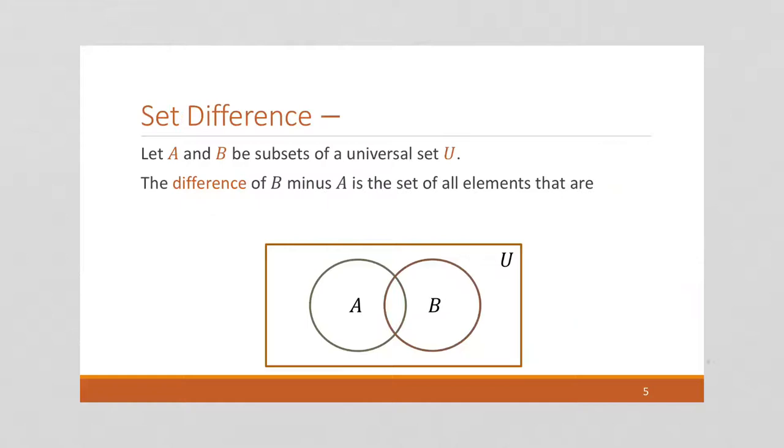Okay, let's look at the next operator. Next operator is the set difference, where we say the difference of B minus A is the set of all elements that are in B but not in A. So we say B minus A is the set where x is an element of the universe U such that x is an element of B and x is not an element of A.